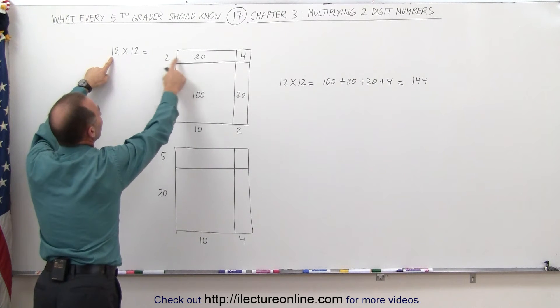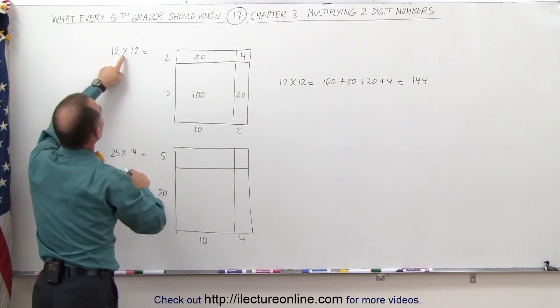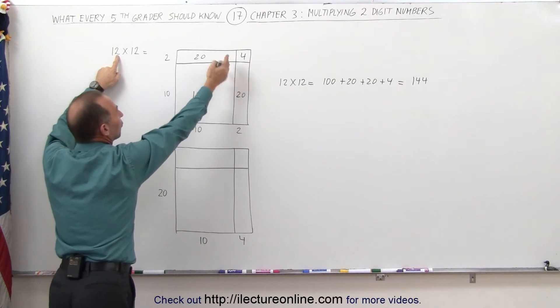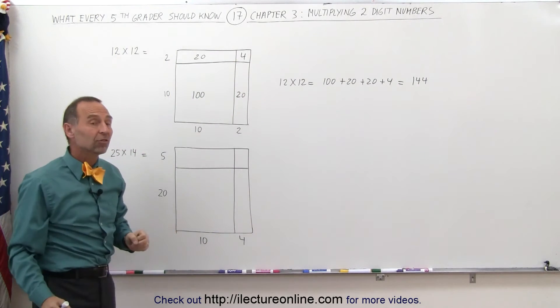This 10 times this 2, which gives us 20. This 10 by this 2, which gives us the other 20. And then 2 times 2, which gives us the 4. And this graphically represents what that multiplication is.